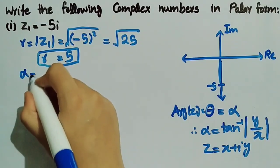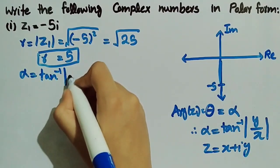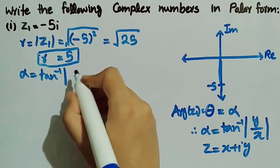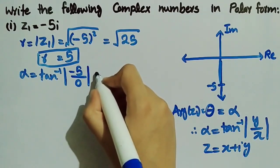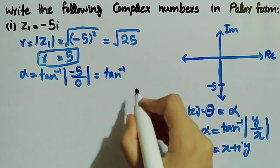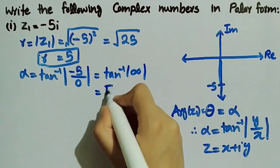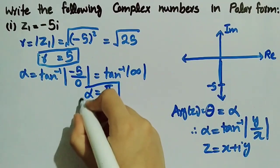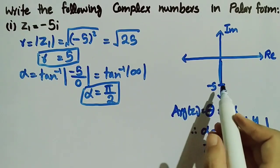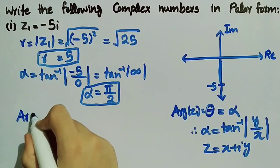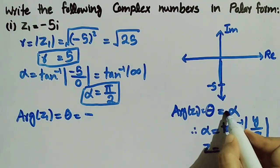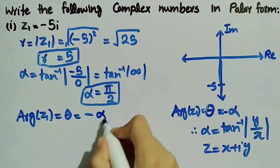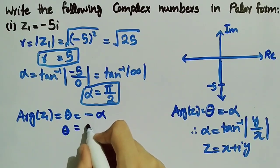Now we will find the value of alpha, which is equal to tangent inverse of y over x. Here the imaginary part y is equal to minus 5 and the real part x is 0, so we have tangent inverse of minus 5 over 0, which is equal to tangent inverse of infinity, which is equal to pi by 2. Since the complex number is on the negative imaginary axis, theta equals minus alpha, so theta equals minus pi by 2.